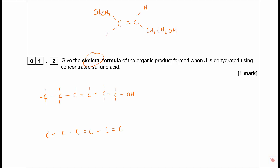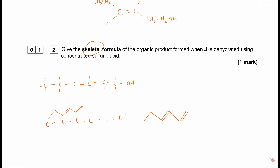We need to draw it as a skeletal formula. So it's going to be: CH₃, up to CH₂, down to CH, then double bonding, giving us the skeletal structure with six carbons and a double bond. That's one mark. Draw it out fully first - don't just jump into drawing the skeletal formula or you'll trip up and lose marks.